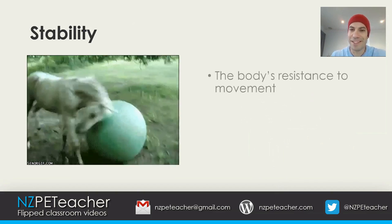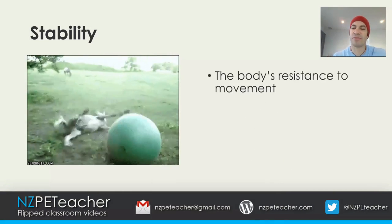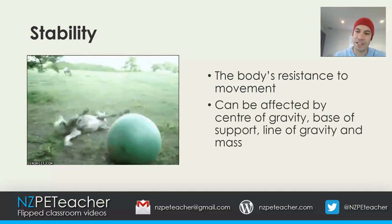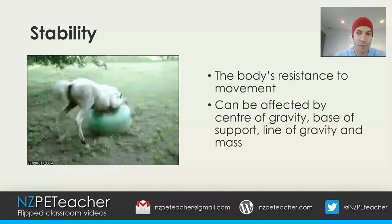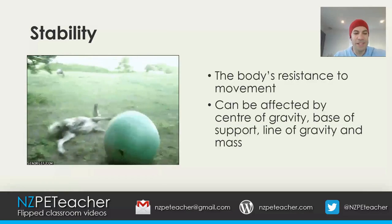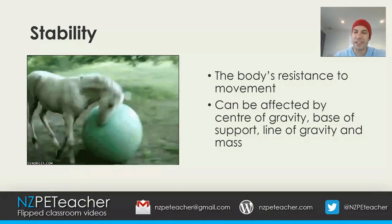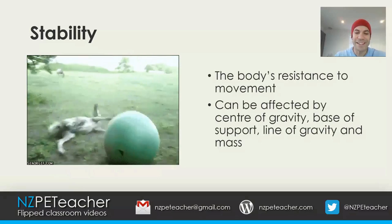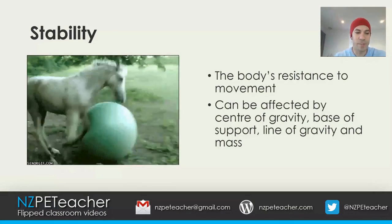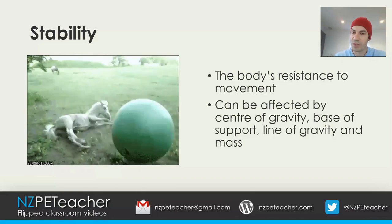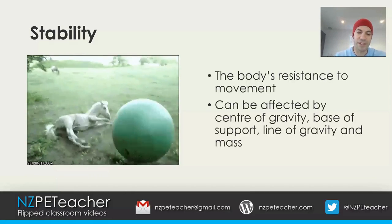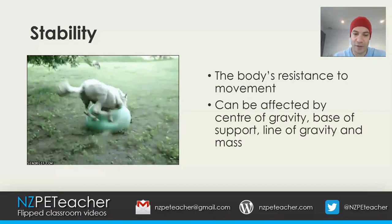Alright, let's take a look at stability. Stability is a body's resistance to movement. It can be affected by centre of gravity, base of support, line of gravity and mass. Stability requires a high degree of equilibrium. An athlete's loss of stability can have an adverse effect on their ability to perform the skills of a given sport with control. A loss of control can affect factors such as force production and accuracy.